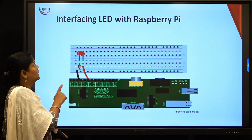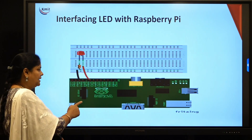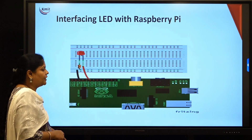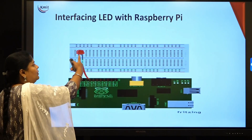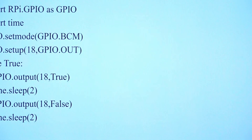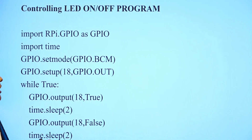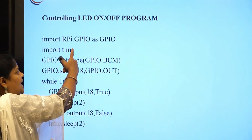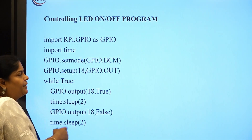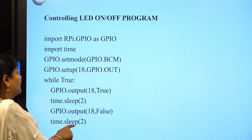For interfacing an LED with Raspberry Pi, the Raspberry Pi is connected to a breadboard. A program is written to make the LED glow on and off. The LED's output pin is connected to the 18th pin of the Raspberry Pi board.